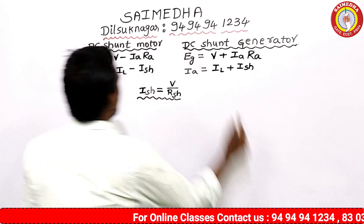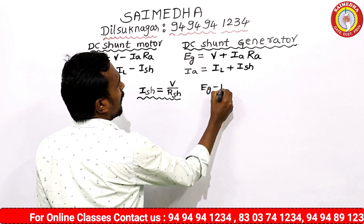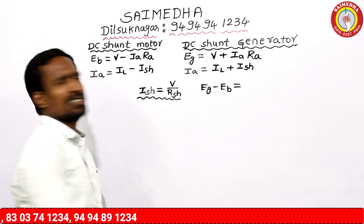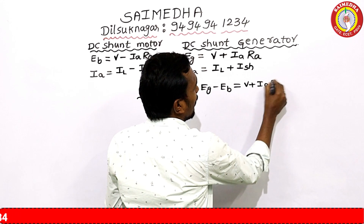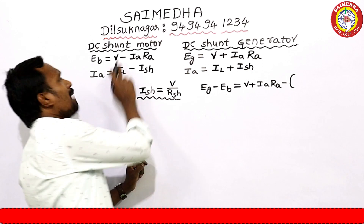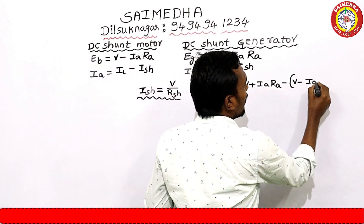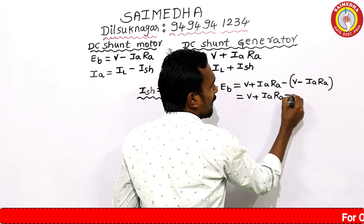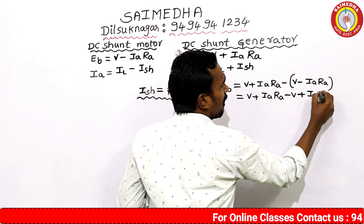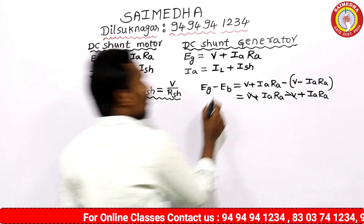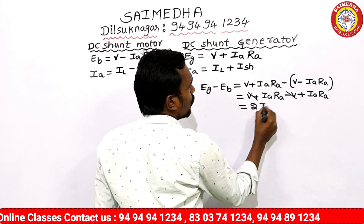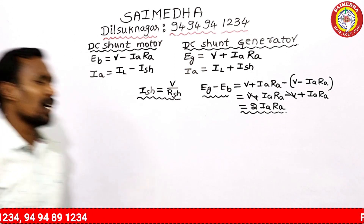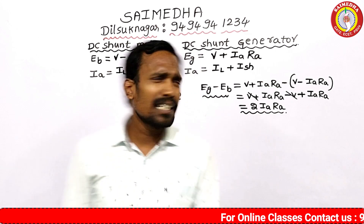Now, one question: what is the difference between generated EMF and back EMF? Generated EMF EG equals V plus IA·RA, and back EMF Eb equals V minus IA·RA. Subtracting: EG minus Eb equals (V plus IA·RA) minus (V minus IA·RA). The V terms cancel, so EG minus Eb is equal to 2·IA·RA.